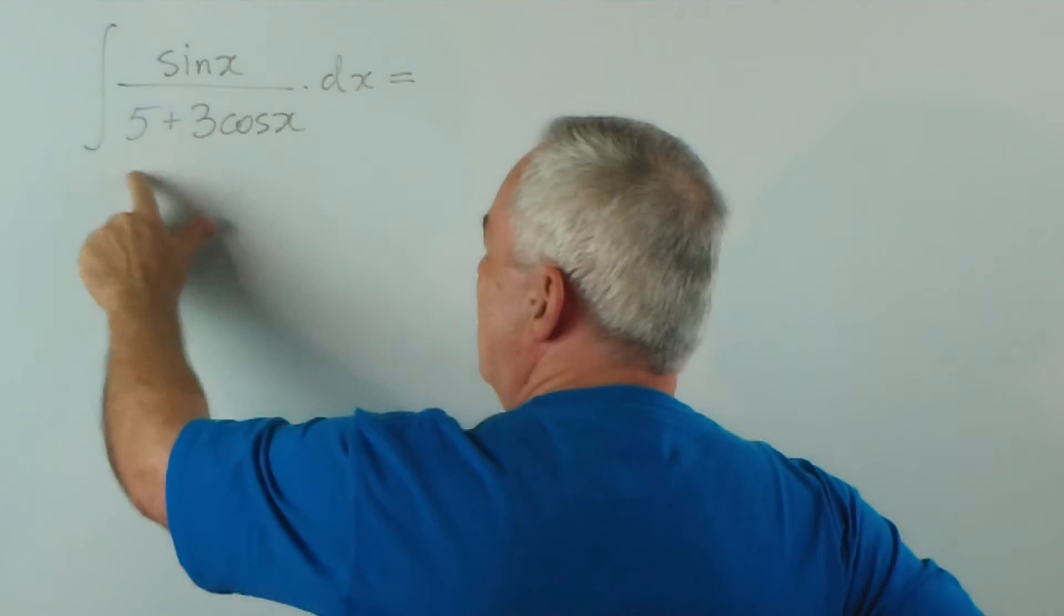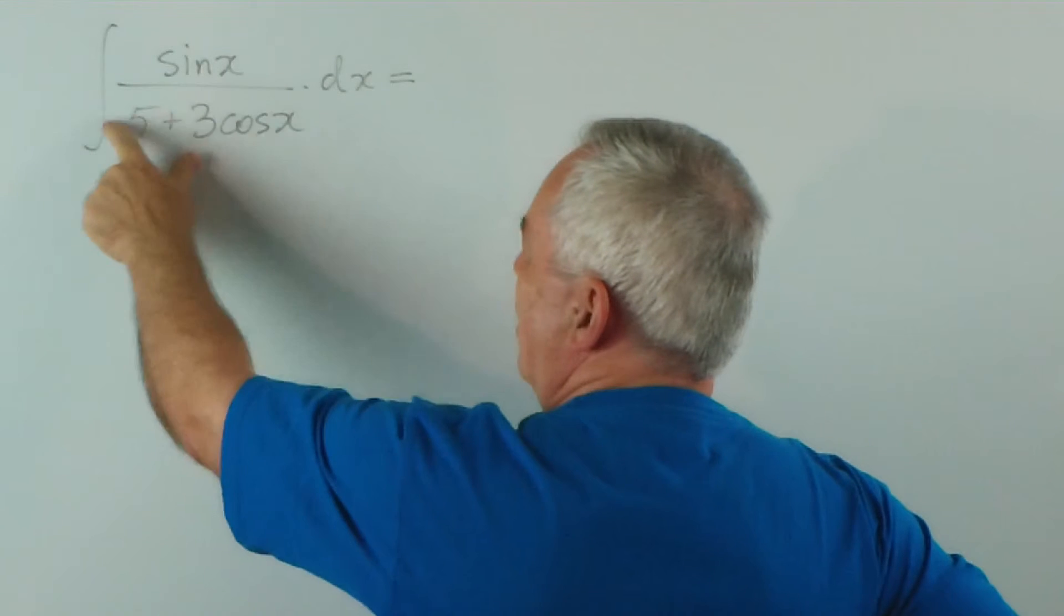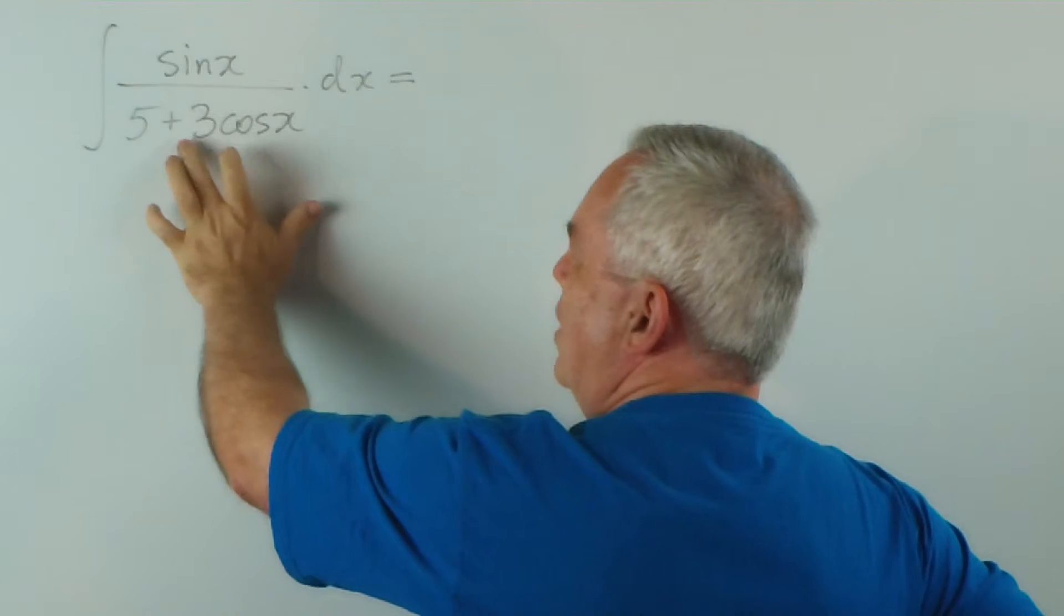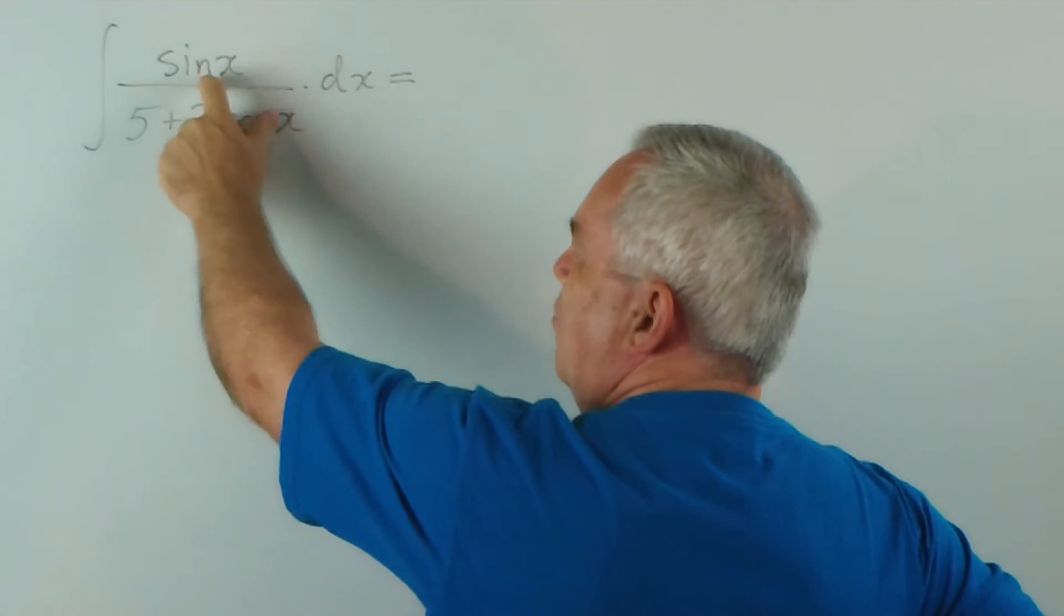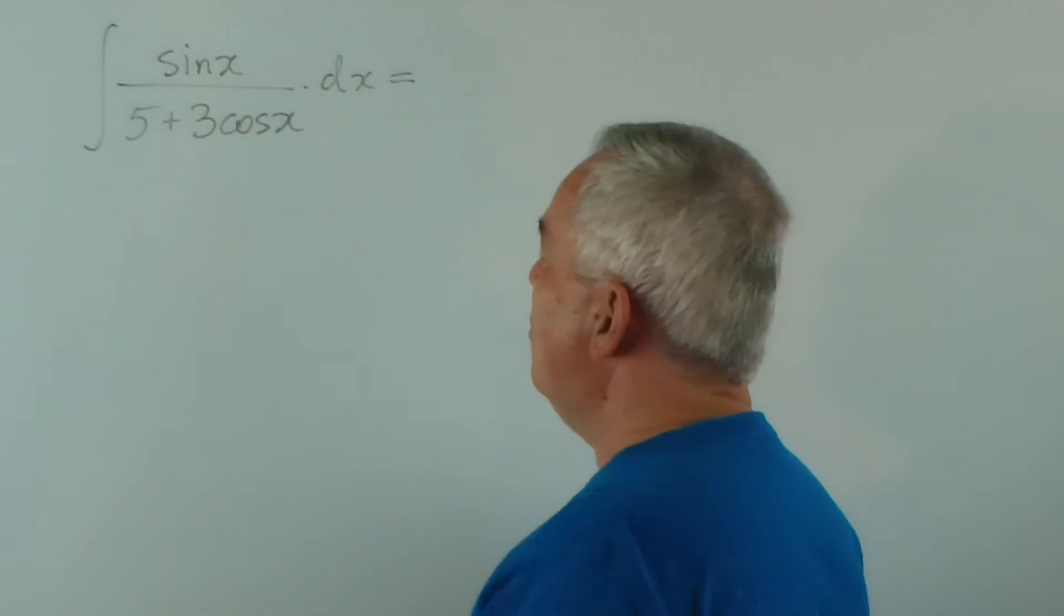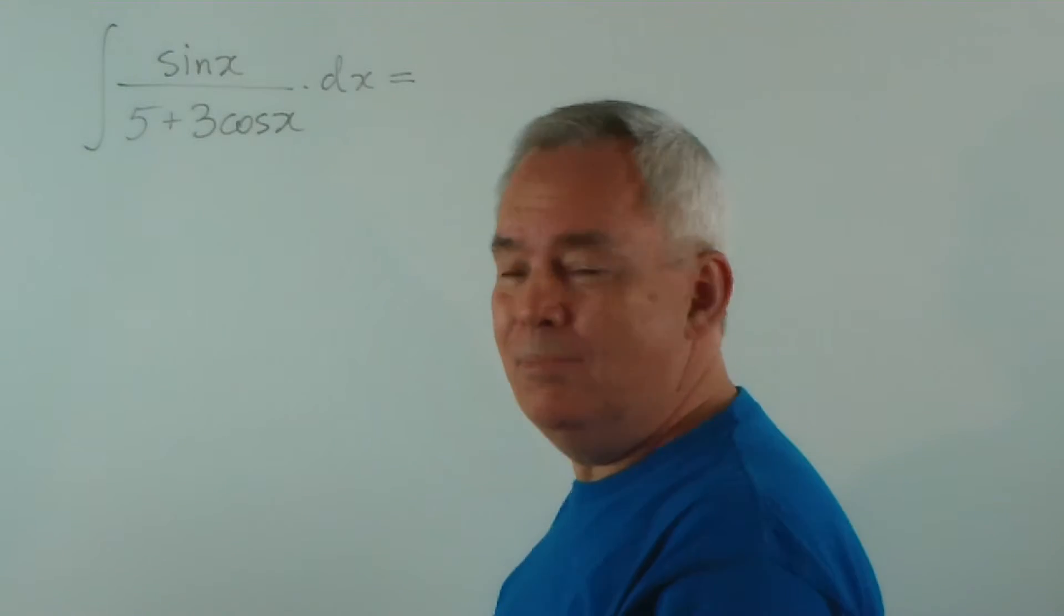if you find the derivative of the denominator, the derivative of 3 cos x is simply negative 3 sin x. Very similar to the numerator. So we have, in fact, a logarithmic structure, pure and simple.